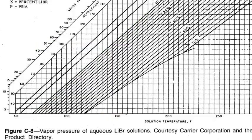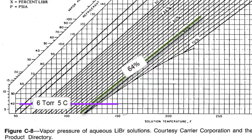In order to make the water in the evaporator boil at 5 degrees C, we need a pressure throughout the evaporator and the absorber of 6 torr. If we choose to use a brine concentration of 64% at the absorber inlet, it must be at 57 degrees C.